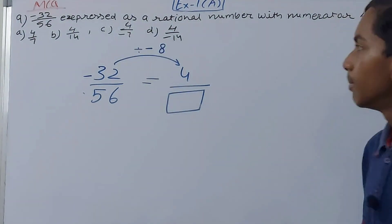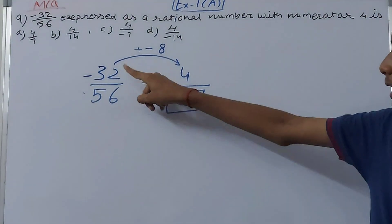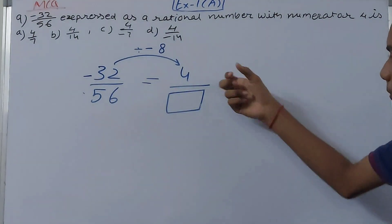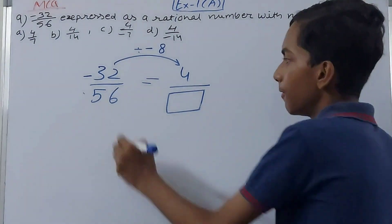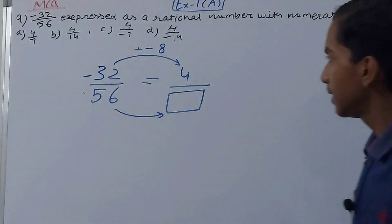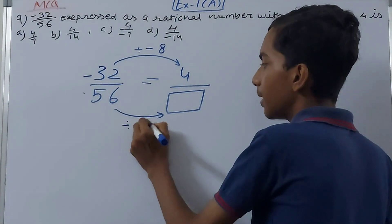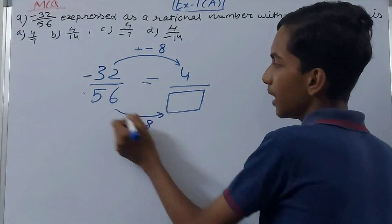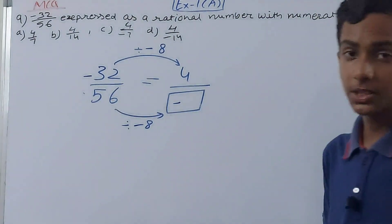Because minus divided by minus is plus, and 32 by 8 is 4. Then here we have 56, divided by minus 8. So plus minus is minus in division, and 56 goes 7 times by 8.